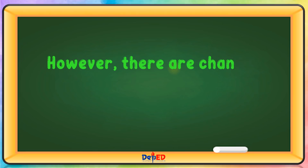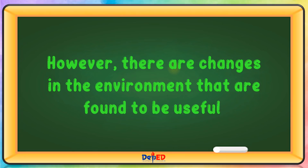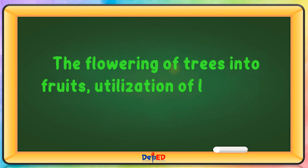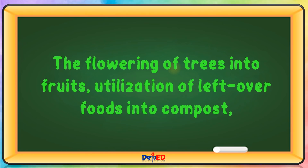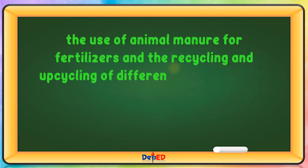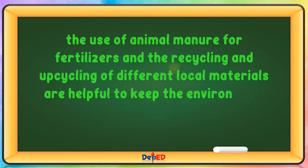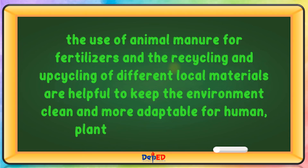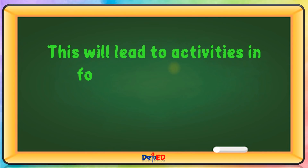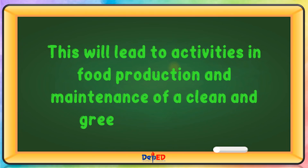However, there are changes in the environment that are found to be useful. The flowering of trees into fruits, utilization of leftover foods into compost, the use of animal manure for fertilizers, and the recycling and upcycling of different local materials are helpful to keep the environment clean and more adaptable for humans, plants, and animals to live. This will lead to activities in food production and maintenance of a clean and green environment.